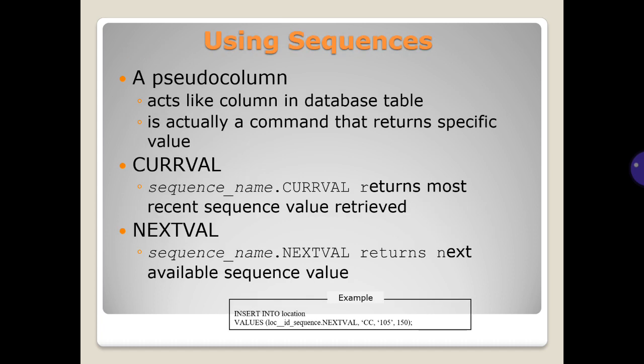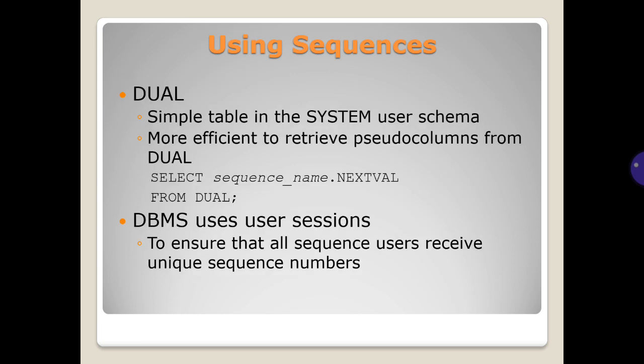Using sequences. A pseudo column acts like a column in database table but is actually a command that returns a specific value. CURRVAL returns most recent sequence value retrieved. NEXTVAL returns the next available sequence value. Dual: a simple table in the system user's schema. More efficient to retrieve pseudo columns from dual. The DBMS uses sessions to ensure that all sequence users receive unique sequence numbers.